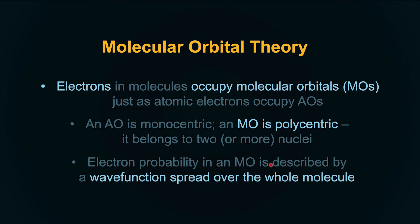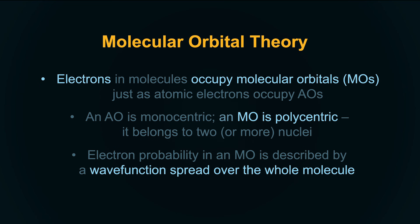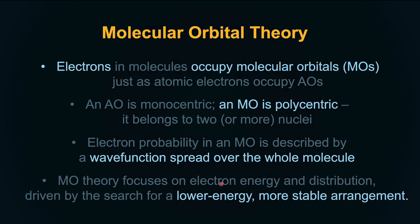Electrons in molecules occupy molecular orbitals just like atomic electrons occupy atomic orbitals. An atomic orbital is monocentric — it is basically electron probability around one nucleus. A molecular orbital is polycentric — it is a spread of electrons around two or more nuclei considering the whole molecule. Electron probability in a molecular orbital is described by a wave function spread over the whole molecule.